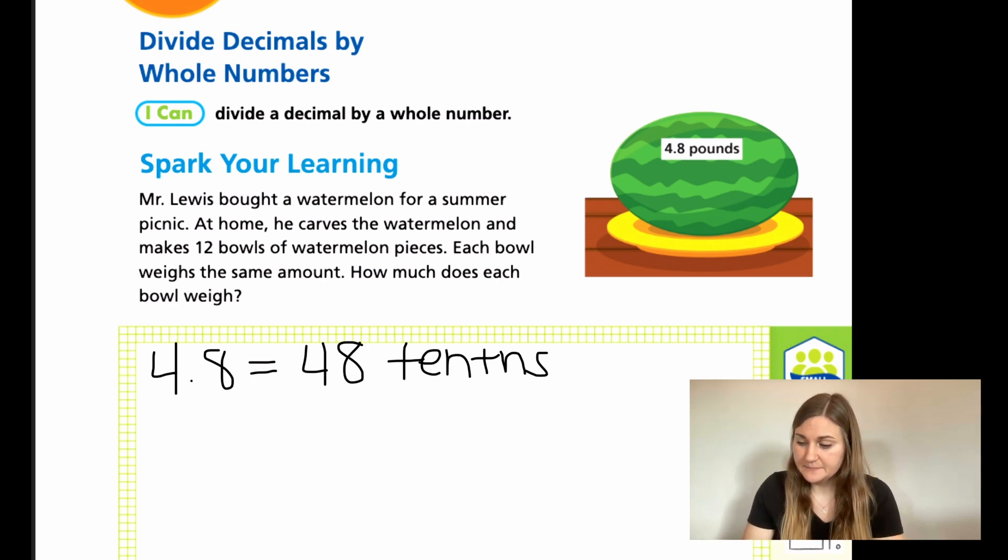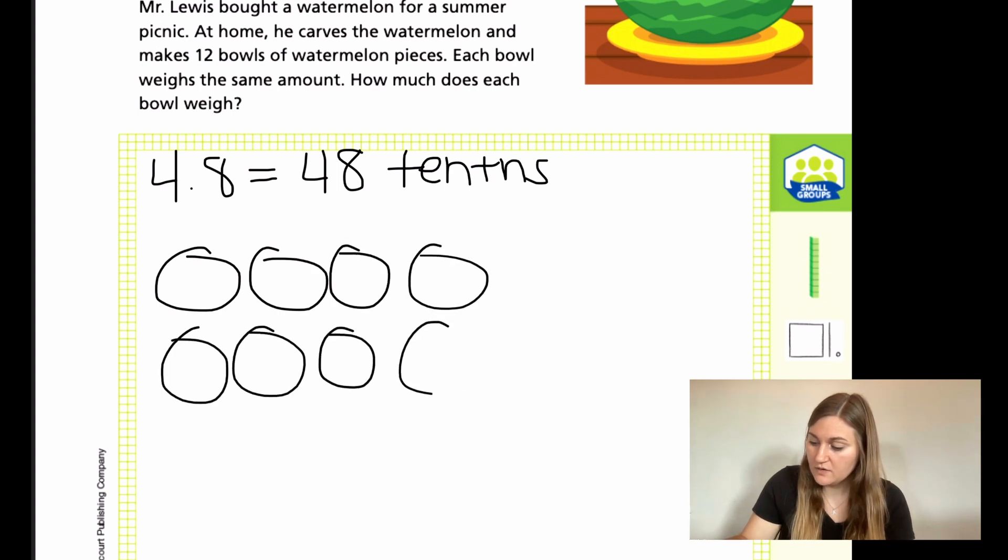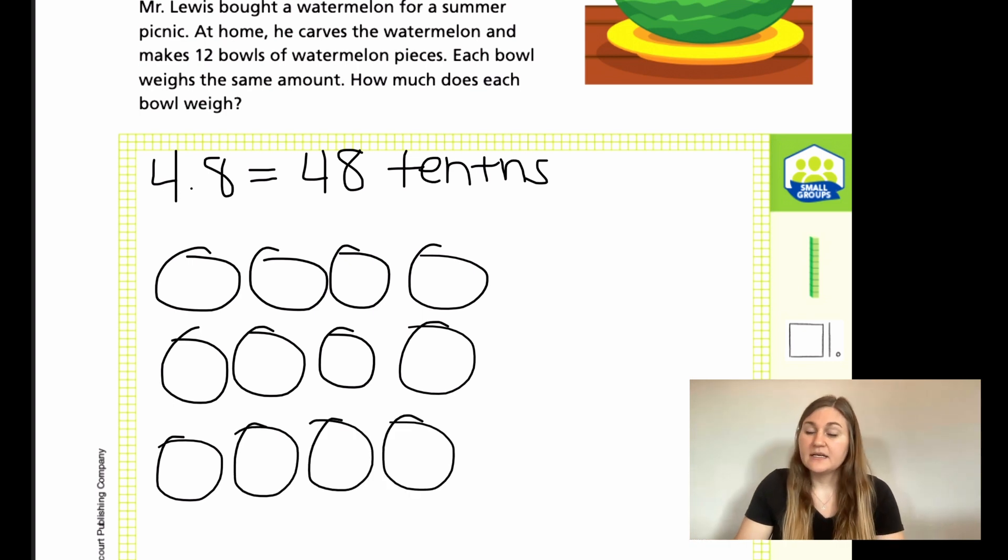So that they're all in the same place value so that it's easier for me to divide. Now, if I have 48 tenths and I know I want to make 12 bowls, I'm going to make 12 circles for my 12 bowls. And if you have your math facts down, you should recognize that 48 divided by 12, or 12 times what equals 48, that's going to be 4. So I am going to have 4 different pieces in each of my bowls.